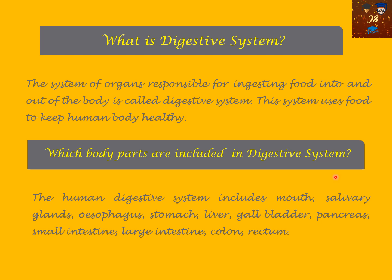Now, which body parts are included in the digestive system? Not all body parts inside our body are part of the digestive system — there are some specific ones. They include the mouth, salivary glands, esophagus, stomach, liver, gallbladder, pancreas, small intestine, large intestine, colon, and rectum.